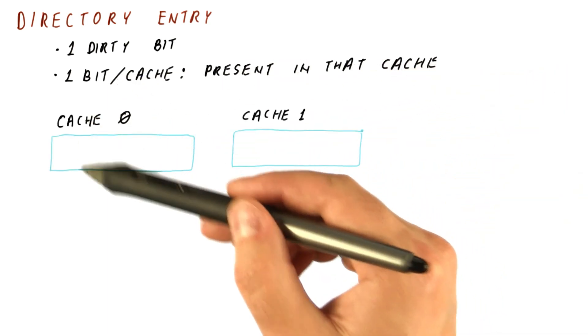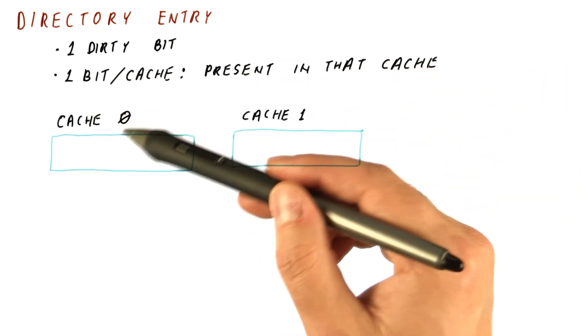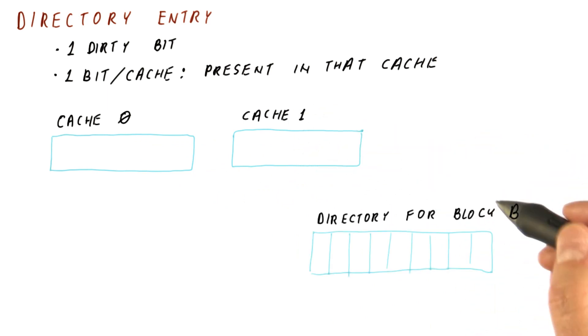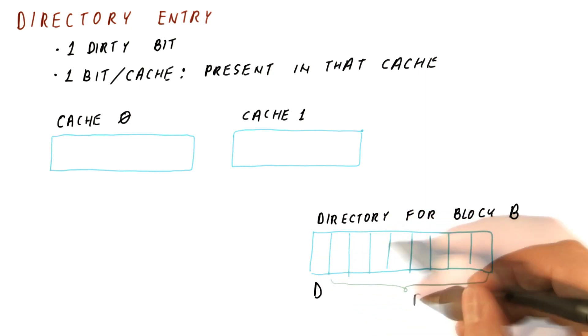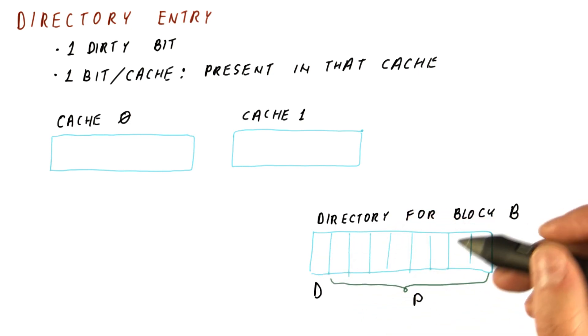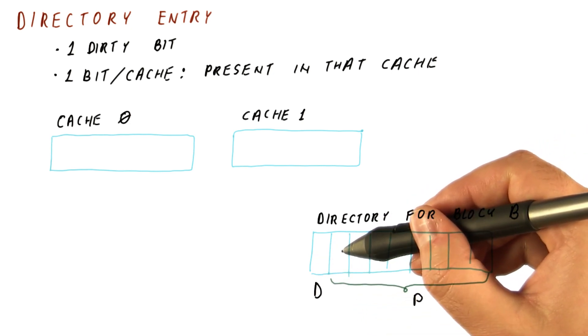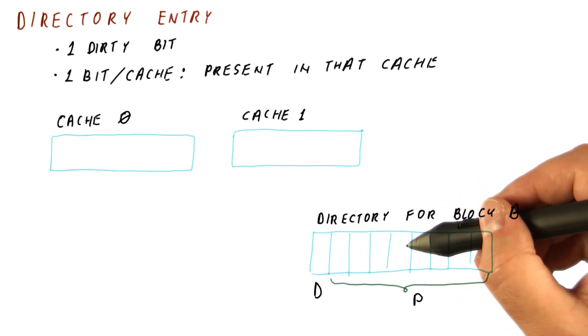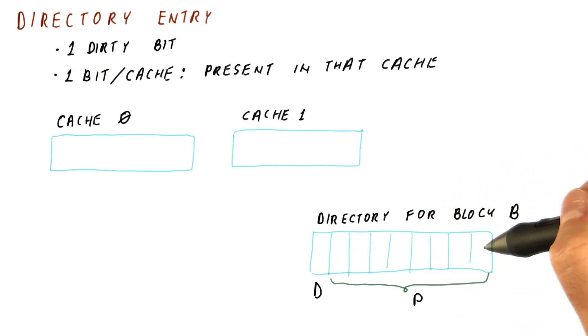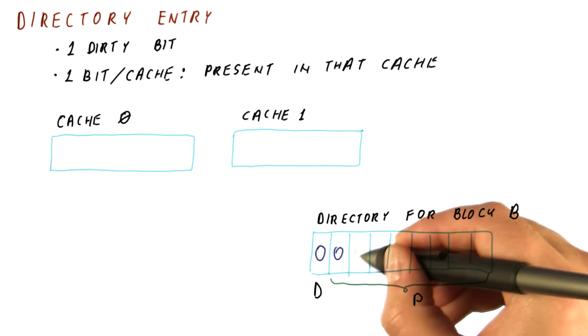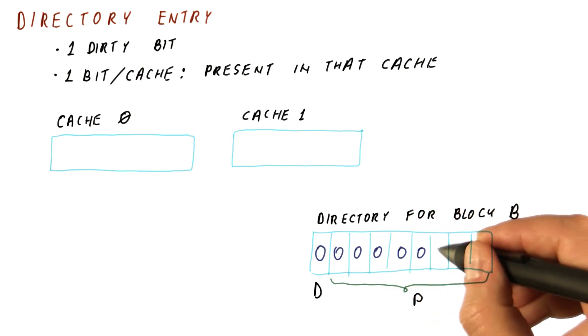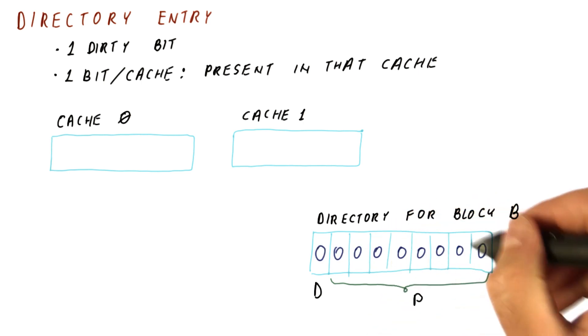So let's say we have one block caches at core zero and one. And let's say this is the directory entry for block B, where this is the dirty bit. And these are the presence bits for cores 0, 1, 2, 3, 4, 5, 6, and 7. So this is an eight core system. So we need eight bits to represent presence of the block in the caches. Initially, the block is not dirty and is not present in any of the caches.